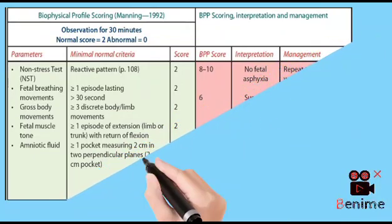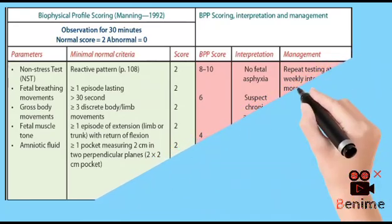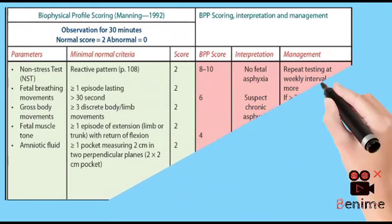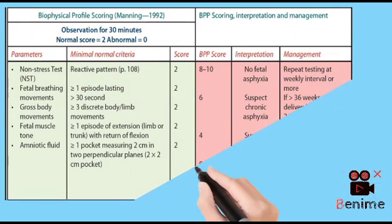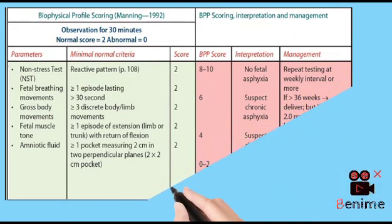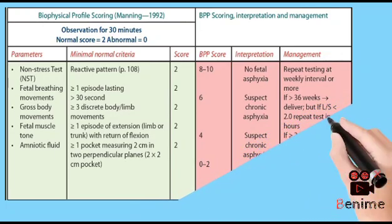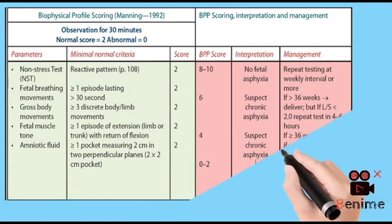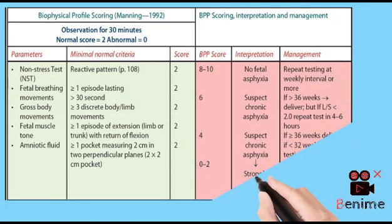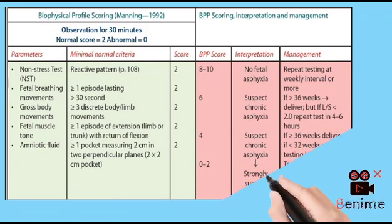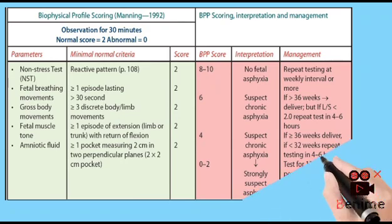The maximum score attainable is 10. The BPP results are interpreted as follows: 8–10 is Normal — the fetus is considered to be in a healthy condition; 6 is Borderline — further evaluation or monitoring may be required; 4 is Abnormal — additional testing and intervention are usually recommended. In cases where the BPP score is low or concerning, additional tests such as a contraction stress test or umbilical artery Doppler may be performed to gather more information about the fetus's well-being.